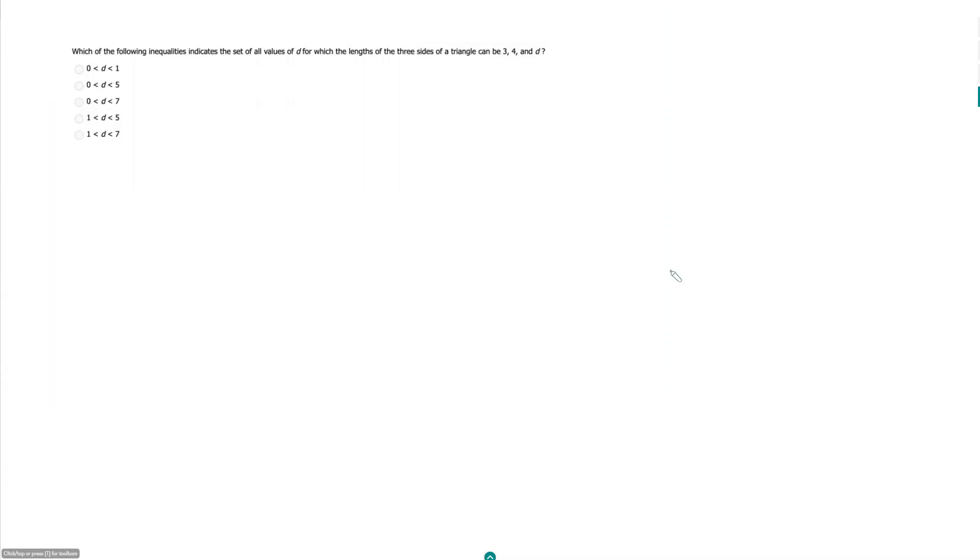So the rule that they are testing here is that the sum of any two sides of a triangle must be greater than the third side. So what that means for D here is D has got to be less than 7 and D has got to be greater than 1.